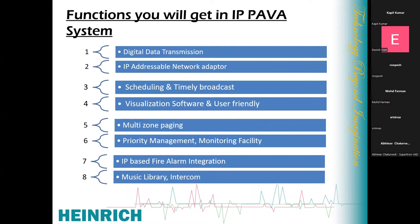In the IP PA system, you get digital data transmission and IP addressable network adapters. All our controllers — single zone, four zone, and eight zone — are connected over the network. You can connect any number of controllers over the network to expand your zones. If you want 400 zones, you can connect 100 four-zone controllers. There is no limitation on the number of controllers or amplifiers — expandability is entirely based on your application requirements.